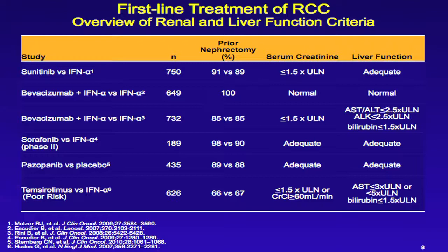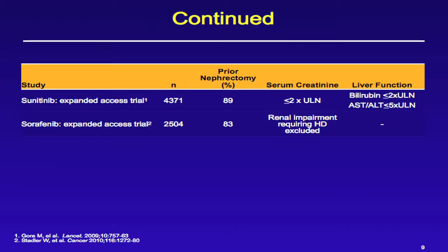Looking at first-line treatment of kidney cancer, I added the serum creatinine and liver function criteria necessary to participate in these studies. Looking at Sunitinib, the two studies of Bevacizumab, Sorafenib phase II study, Pazopanib, and Temsirolimus — they all excluded patients with significant renal insufficiency or liver dysfunction, corresponding to about CTCAE grade one. The Sunitinib expanded access trial required serum creatinine less than two times the upper limit of normal — about CTCAE grade two for liver function. The Sorafenib expanded access trial excluded patients requiring hemodialysis.